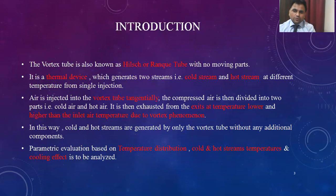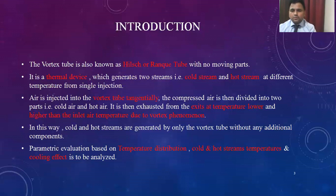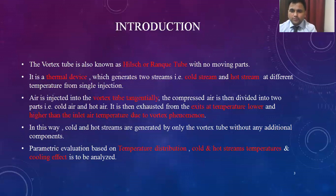This forced vortex moves along the periphery of the Vortex Tube and reaches the end of the control wall. The control wall restricts the flow of air and opens when required, creating a stagnation point where there is a reversal of flow — the forced vortex. This forced vortex then comes in contact with the forward-moving free vortex, and the energy for the forced vortex is obtained from the outer moving free vortex.